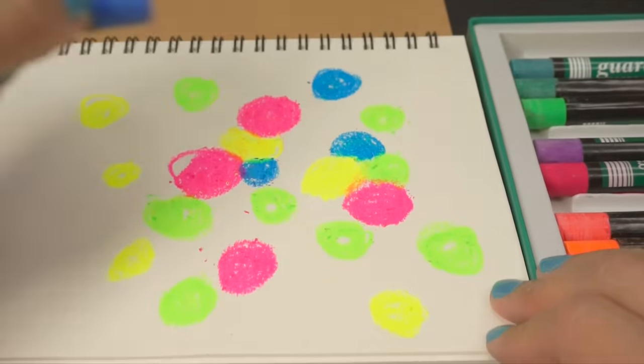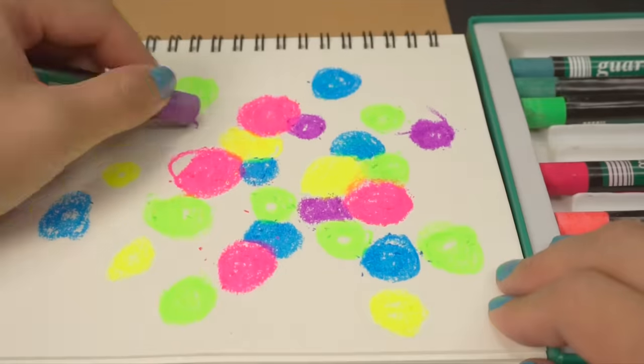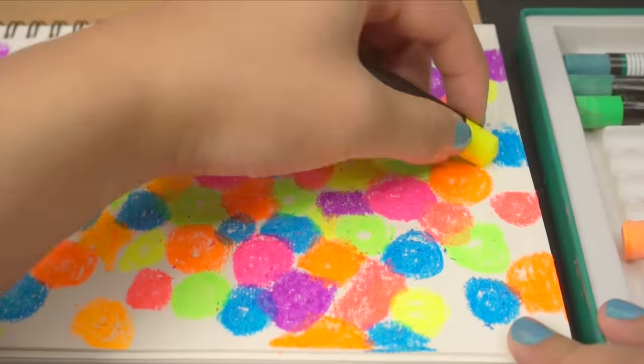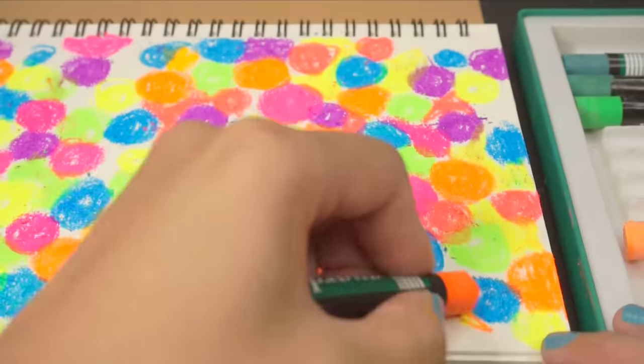I'm using round blobs here but you can also draw stripes, triangles or any random shape you like. For best results try to make sure that the page is covered up with more pale colors like yellow, orange and pink instead of darker ones like blue or purple.